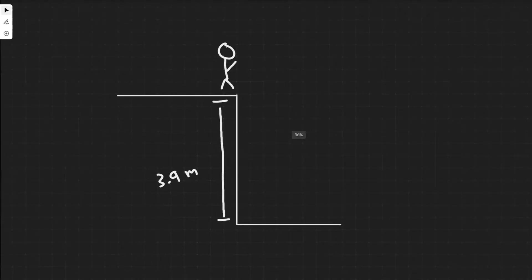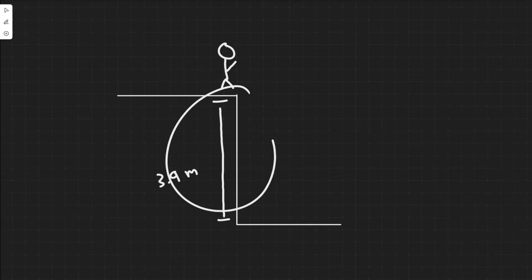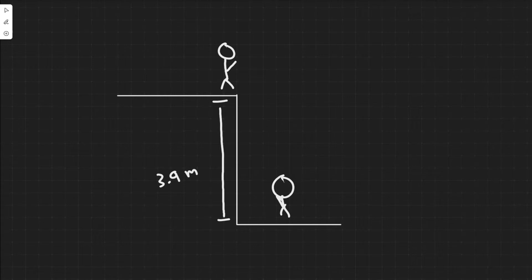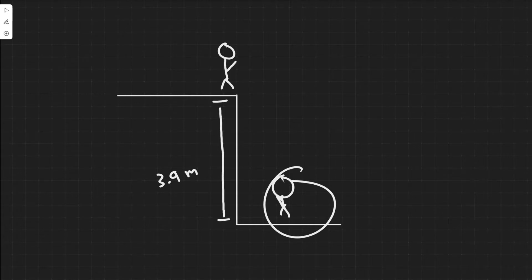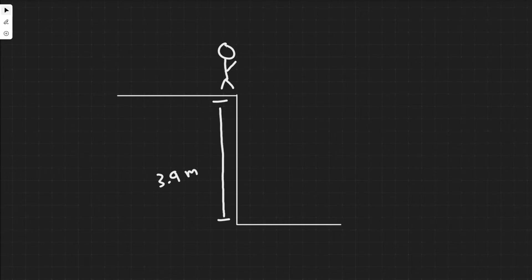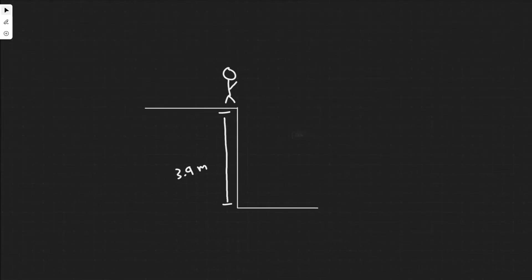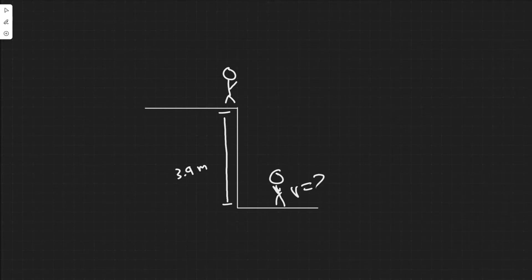In order to solve this problem, first let's draw what's going on. We have this guy — he's going to jump off this roof that's 3.9 meters high, land here, and then we know he's going to slow down. He's bending his knees so that his torso decelerates over an approximate distance of 0.7 meters. We'll deal with that in the second part, but let's focus on the first part first. In Part A, what we're trying to find is his velocity right when he lands — right before his feet strike the ground.